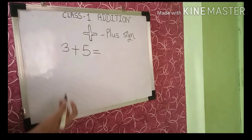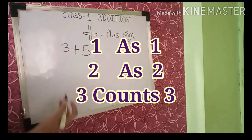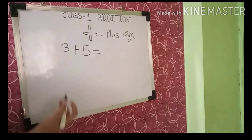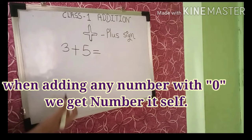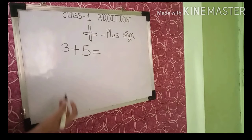As we all know, we count numbers with their values — one is one count, two is two count, and so on. But do you know what is the count for zero? Zero means nothing, so the count of zero is nothing. When zero is added to any number, or any number is added with zero, we get the number itself.